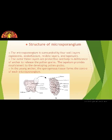The innermost wall layer is called tapetum, and its function is very important — it nourishes the developing pollen grains, meaning it provides nutrition to the developing pollen grains. Cells of the tapetum possess dense cytoplasm and generally have more than one nucleus. This is the structure of microsporangium. You should go through it properly and practice this diagram.